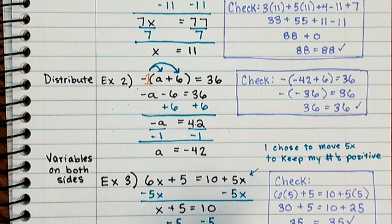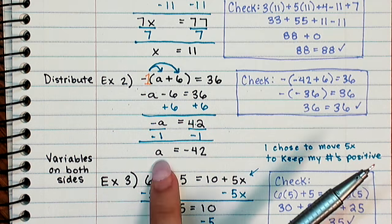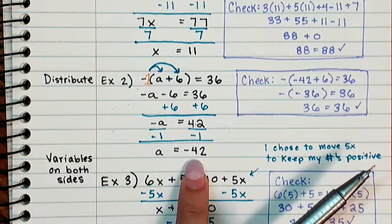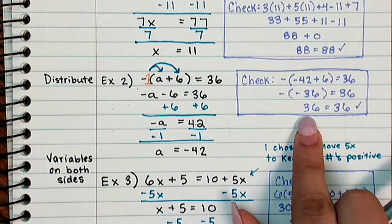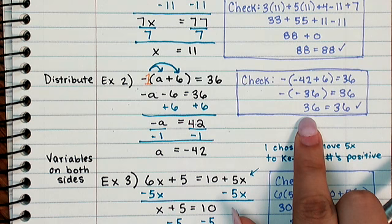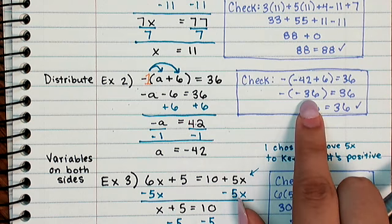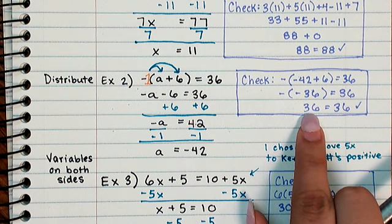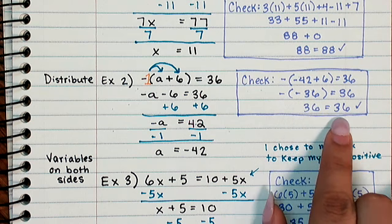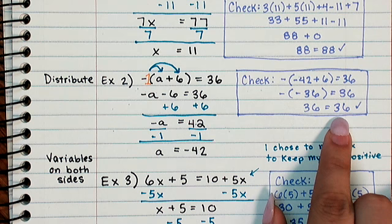Since that negative 1 is being multiplied to both sides, I divide out a negative 1, and that'll give me a equals negative 42. I checked that work by plugging negative 42 back in. I got negative negative 36, which is positive 36, and I saw that my answer was right.